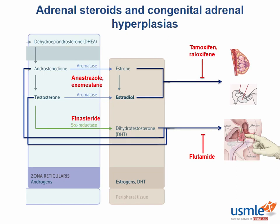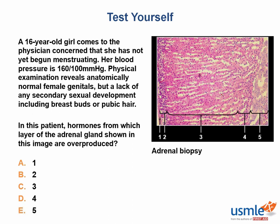You'll learn about this more in repro, but for now we're going to try a test-yourself question. The rules: a question goes up on the page and you have a minute and a half to answer it. A 16-year-old girl comes to the physician concerned that she has not yet begun menstruating. Her blood pressure is 160 over 100 mmHg. Physical exam reveals anatomically normal female genitals, but lack of any secondary sexual development, including breast buds or pubic hair. In this patient, hormones from which layer of the adrenal gland are overproduced — Zone 1, Zone 2, Zone 3, Zone 4, or Zone 5?